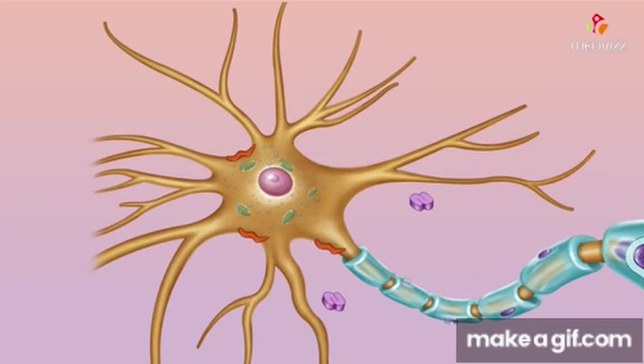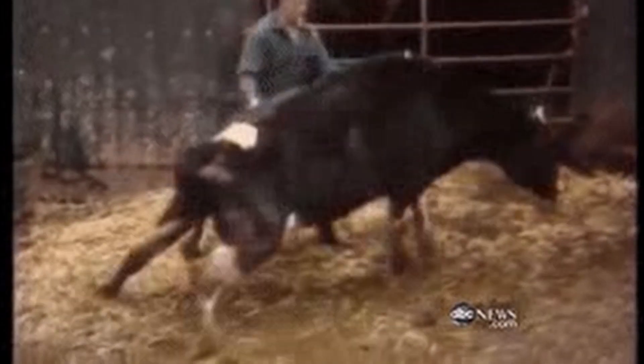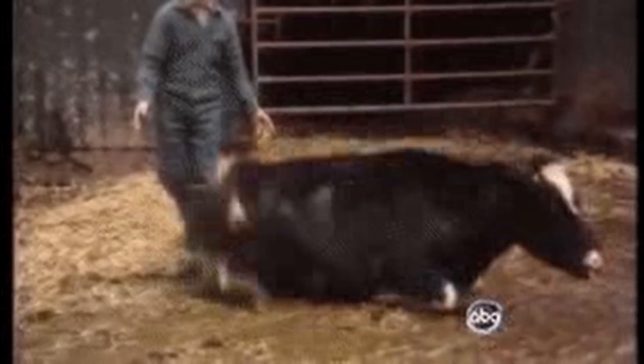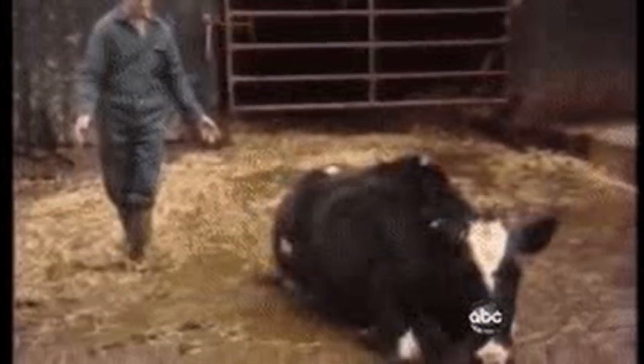Mycorrhizal relationship: The death cap forms a mutualistic mycorrhizal relationship with trees of various species. In this symbiotic association, the fungus exchanges nutrients with the tree roots. The tree provides the fungus with carbohydrates, while the fungus enhances the tree's nutrient uptake.